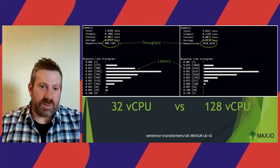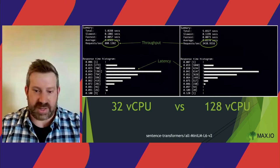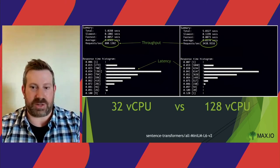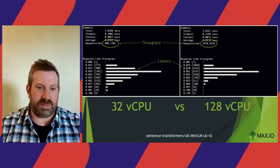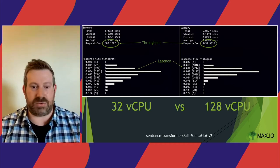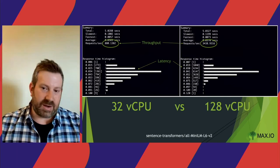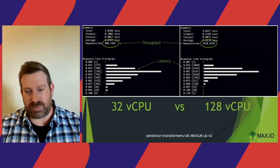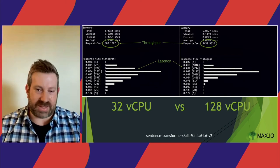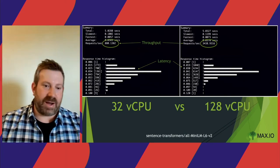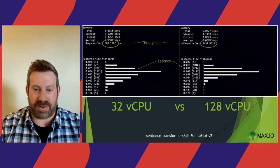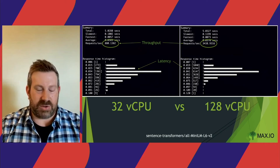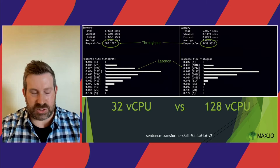What we saw was various throughputs and latencies. Latency and throughput are very closely connected, depending on how you organize resources on a machine. Throughput can be around 880 requests per second on a 32 vCPU machine, and on a 128 vCPU machine you can scale that linearly if you do things right. Latency is roughly between 20 and 60 milliseconds, with some outliers. The key is to look at the histogram of latency, not just a single number.